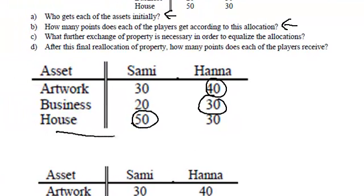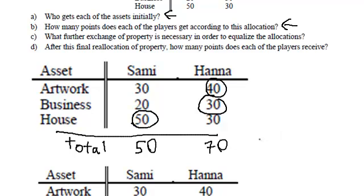Let's find the total. Sammy has a total of 50 and Hannah has a total of 70. So Hannah actually has the higher total here. We are now asked what further exchange of property is needed in order to equalize the allocations. Since Hannah is higher, Hannah's assets need to be transferred first.